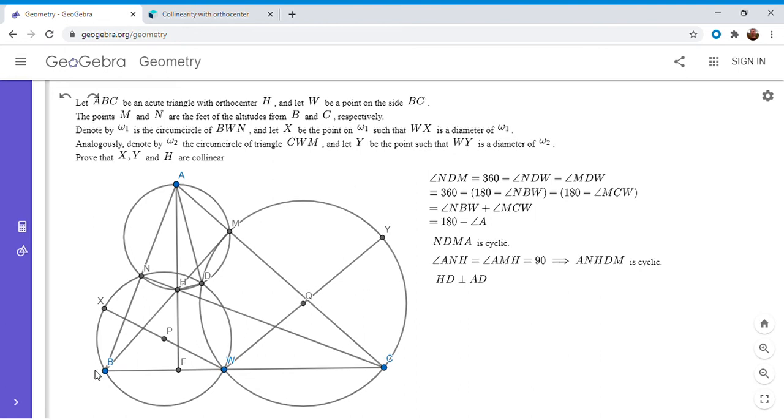So BNMC is a cyclic quadrilateral. I'm going to start by proving that. Angle BNC equals angle BMC, and they're both 90 degrees, so BNMC is cyclic. The whole reason I did this is because I want to use the radical axis theorem on that circle, and on circles BNW and CMW. If I do that, then I get that BN, CM, and DW have to be concurrent.